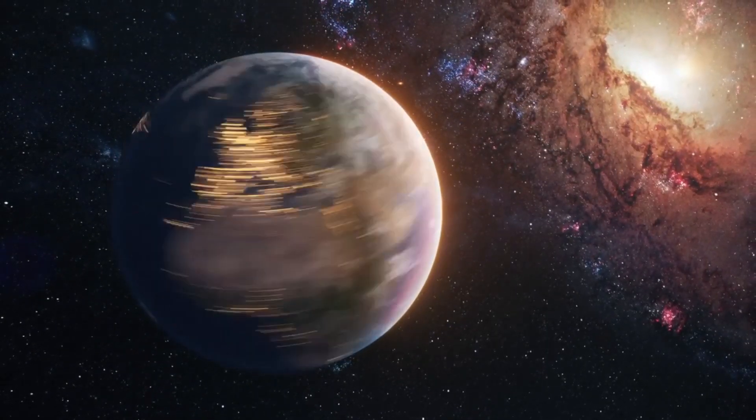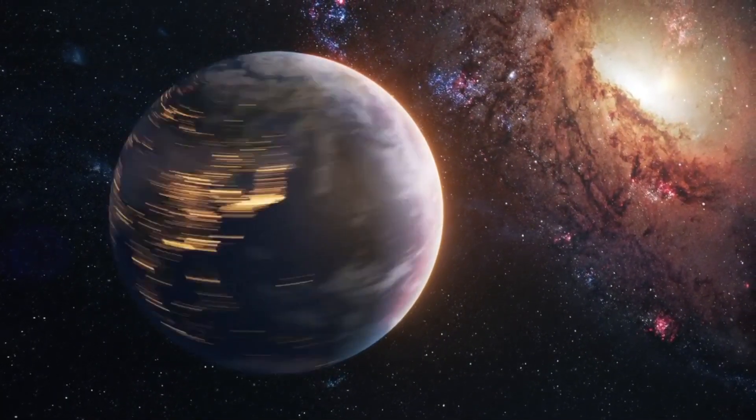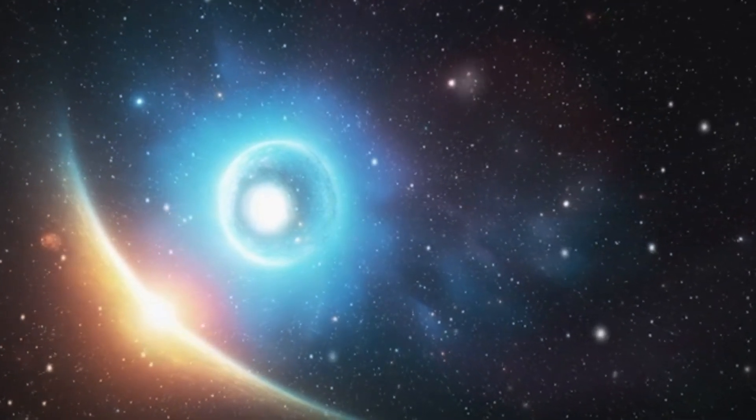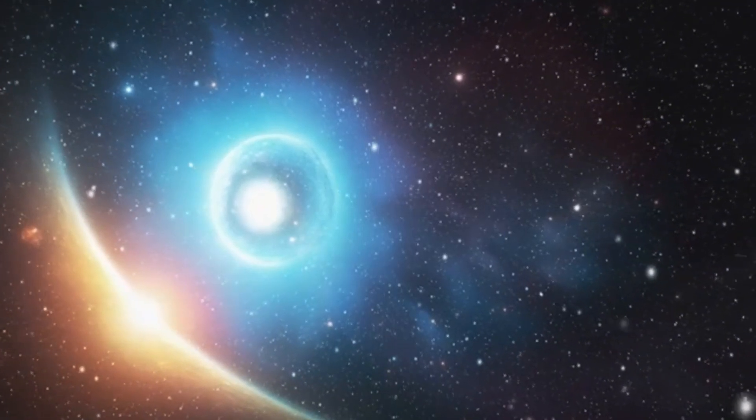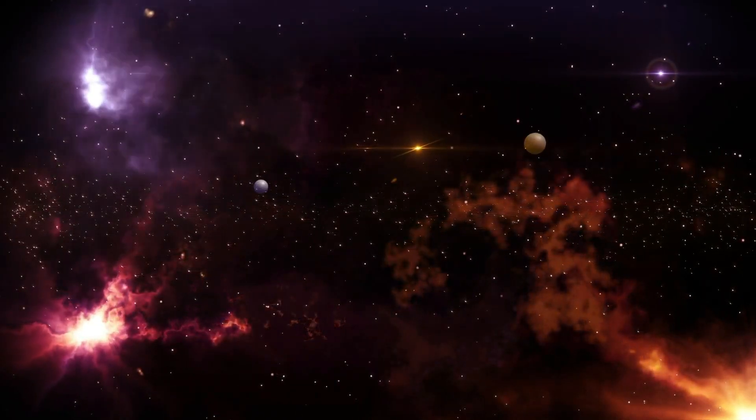Pluto's journey around the Sun is unlike any other planet in our solar system. It takes a staggering 248 years to complete a single orbit, meaning that since its discovery in 1930, it hasn't even finished one full revolution. Yet, the interest doesn't stop there.